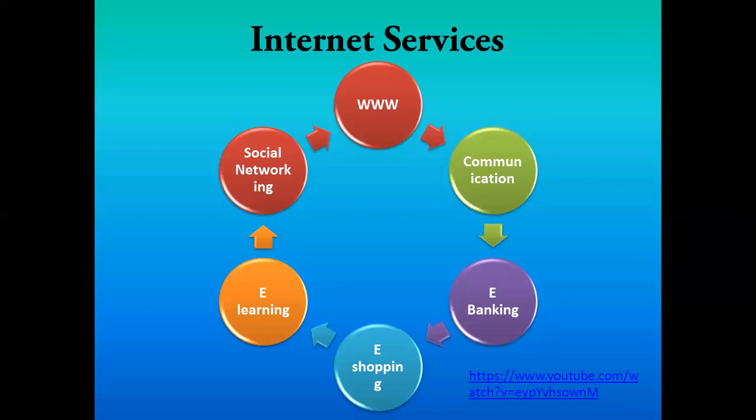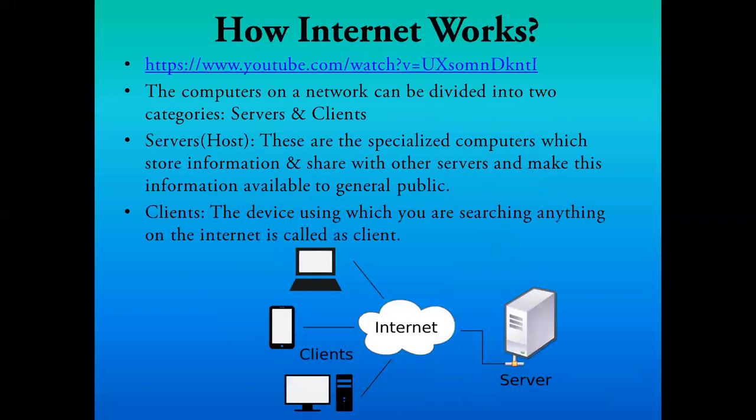Social networking means we are able to communicate with each other, send messages, upload profile pictures, and update our friends and families with videos and photographs. On Facebook, Twitter, Instagram, or YouTube — uploading or posting anything — all this is happening because of the internet, providing the facility to socialize online.